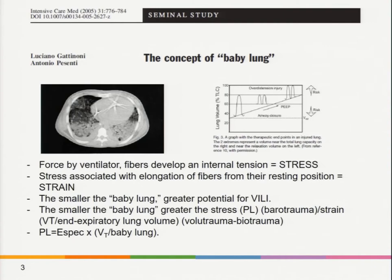The dimensions of the respiratory system are correlated with the dimensions of the baby lung, and barotrauma and volutrauma are related to the baby lung by the following relationship: the transpulmonary pressure equals the specific lung elastance multiplied by the tidal volume applied to the baby lung. So it is easy to understand that the smaller the baby lung, the greater its potential for ventilator-induced lung injury — and the greater the potential for stress and strain.